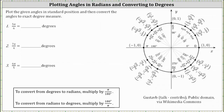We're asked to plot the given angles given in radians in standard position and then convert the angles to exact degree measure. If you're not comfortable working in radians, you could convert to degrees and then sketch the angle in standard position. But there is value in being able to sketch angles in standard position when given in radians, and that's the approach we will take. The initial side will always be along the positive x-axis.